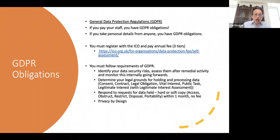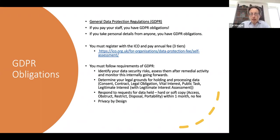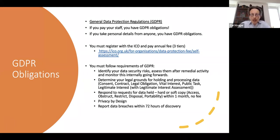GDPR puts in place something called privacy by design — a requirement that you build your data handling and management systems so that privacy is maintained by the way your systems are created. The architecture of the system must demonstrate that privacy will be maintained, with a requirement for consent or a legitimate interest ground with written justifications for why you've gone that route. You are obliged to report any breaches of data within 72 hours of discovery.